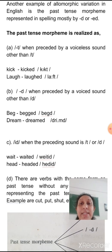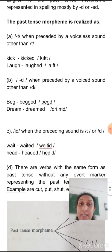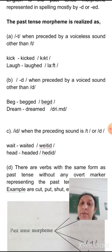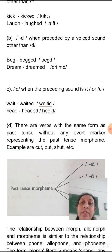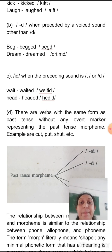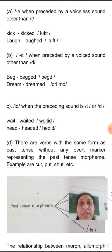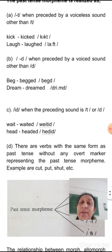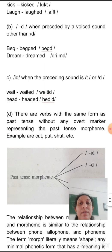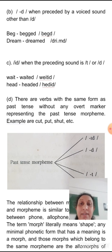The past tense morpheme is realized as /d/ when preceded by a voiced sound other than /d/. For example: 'beg' → 'begged', 'dream' → 'dreamed' — preceded by the voiced sounds /g/ and /m/. The third realization is /ɪd/, which occurs when the preceding sound is /t/ or /d/. For example: 'wait' → 'waited', 'head' → 'headed'.